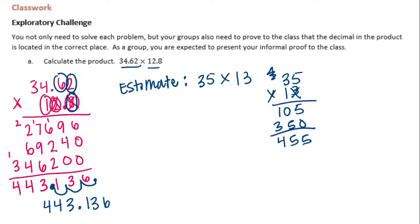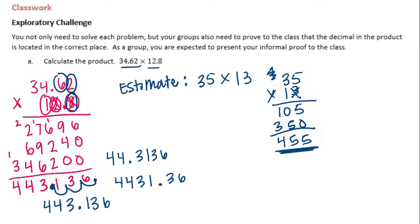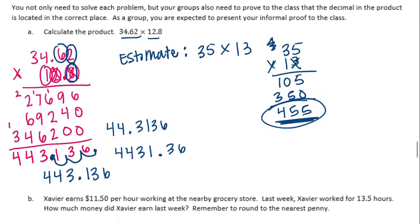We're trying to prove that the decimal is in the correct spot. If the estimate is four hundred fifty-five and the actual answer is four hundred forty-three and one hundred thirty-six thousandths, and if the decimal point was anywhere else — say it was here, forty-four is very far off from four hundred fifty-five. If the decimal had been here, four thousand four hundred thirty-one is also very far away. So if the decimal was in a different place, the product wouldn't be close to four hundred fifty-five. That would be your proof.